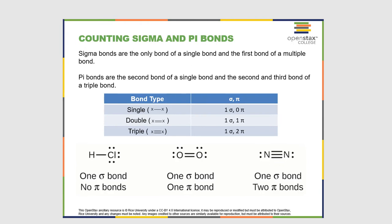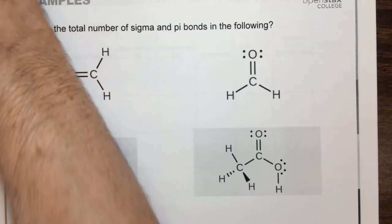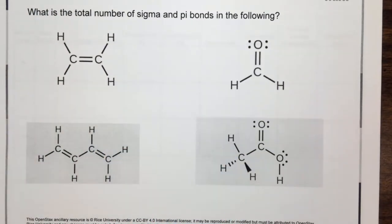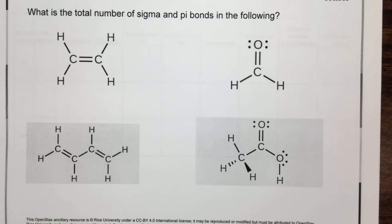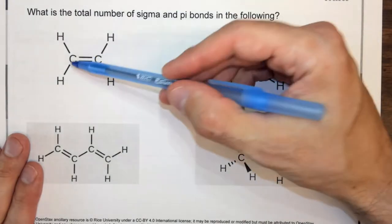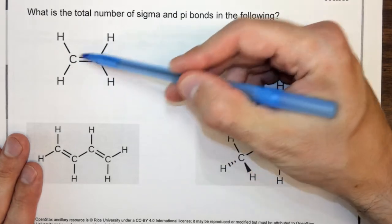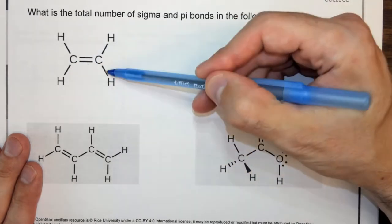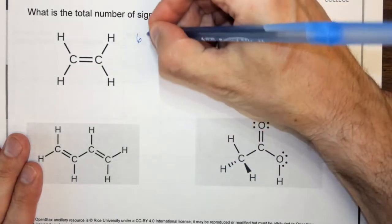The final thing I want to do is go over a few examples of counting sigma and pi bonds in smaller organic molecules. I recommend first counting the total number of bonds, because they're all either sigma or pi — that way you make sure you've found everything. So let's take a look. Counting all the lines in this first molecule gives us six bonds total. Note that the double bond counts twice.